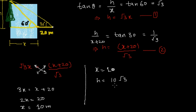So height of the tree is 10 root 3 and the width of the river is 10. Both these values are in meters. So this is the very first problem and after this we are going to take few more problems with increasing difficulty. Keep watching MathSmart and bye-bye till then.